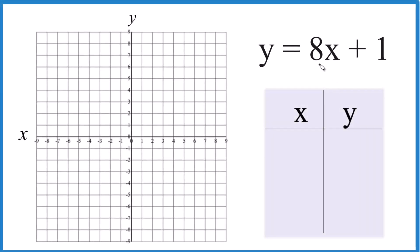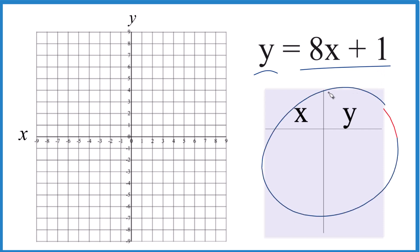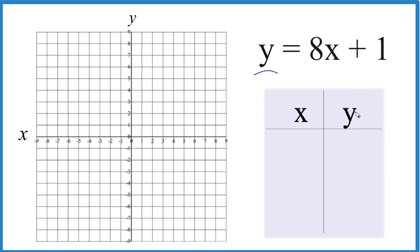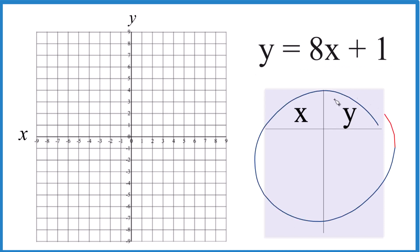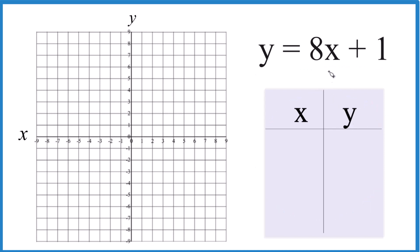Let's graph the linear equation y equals 8x plus 1. We're going to use a table of values. You could use slope-intercept form, and there's a link at the end of the video if you need to know how to do that. But we're going to use a table of values here. We put values in for x, then find out what y equals, and we plot it.